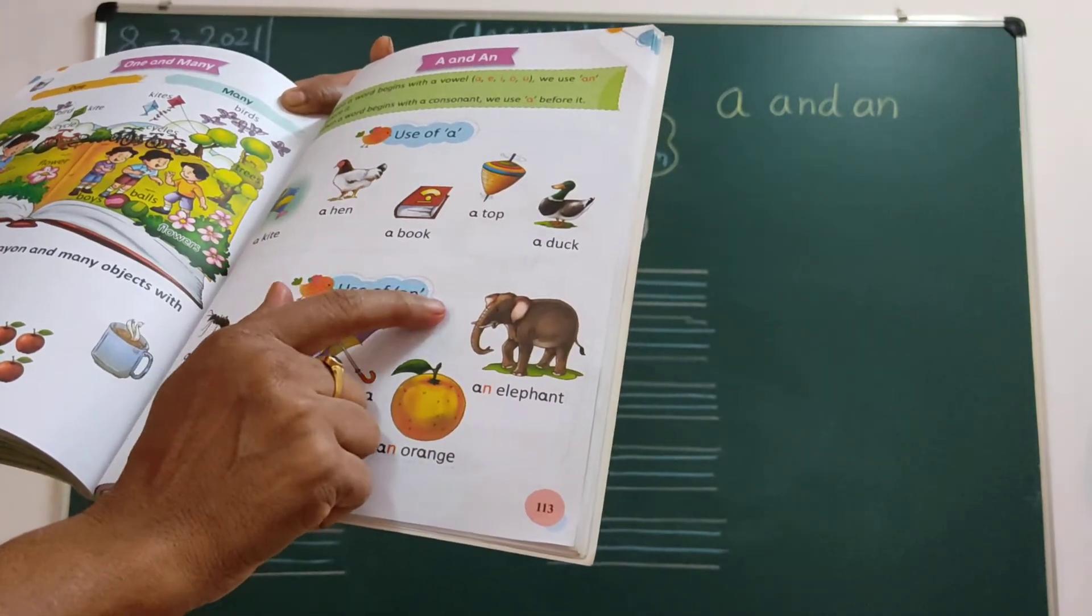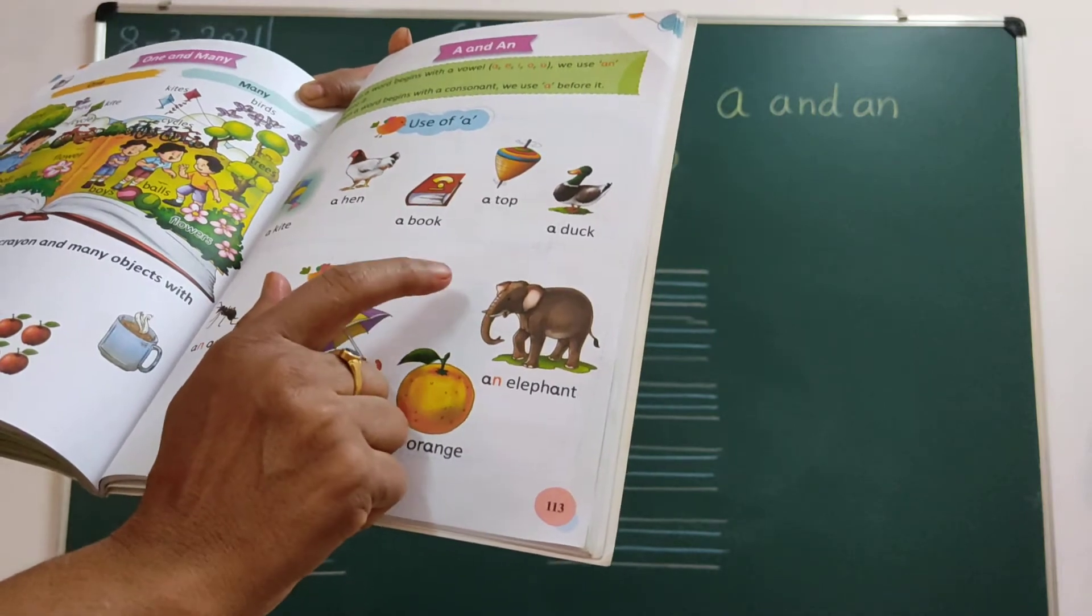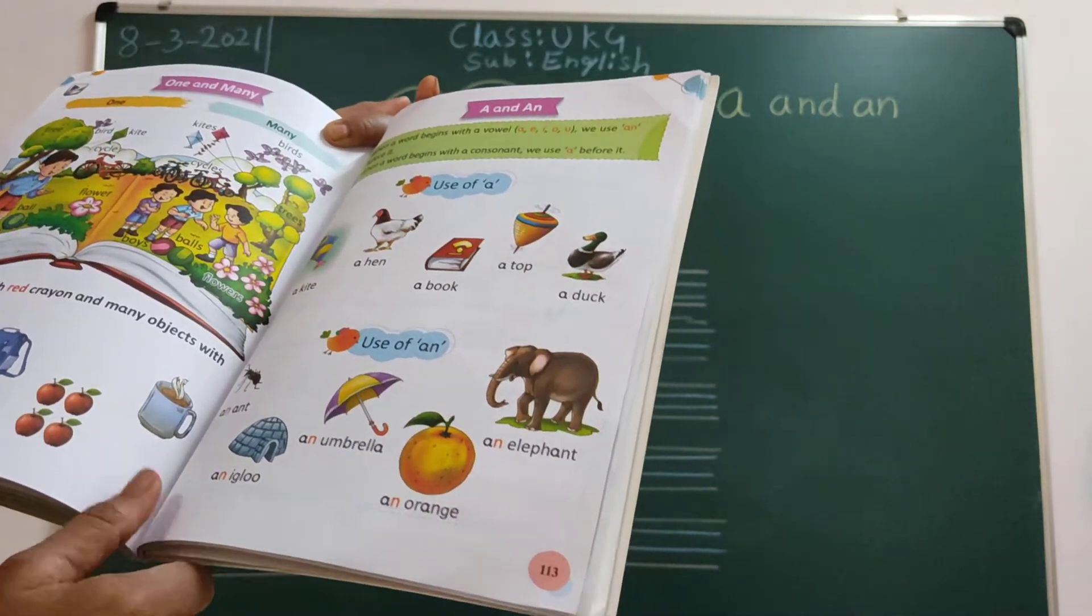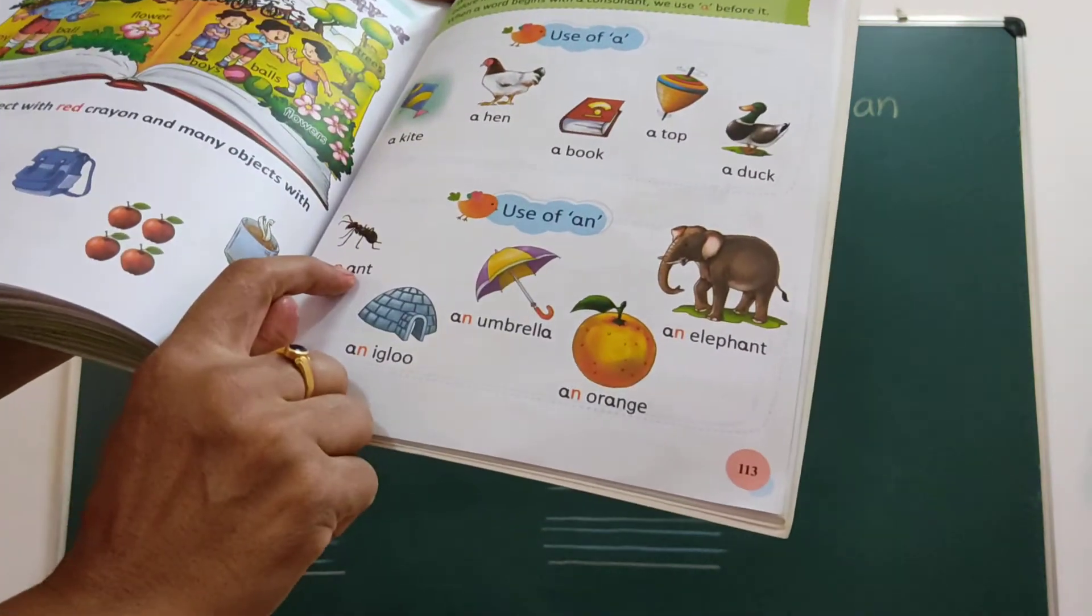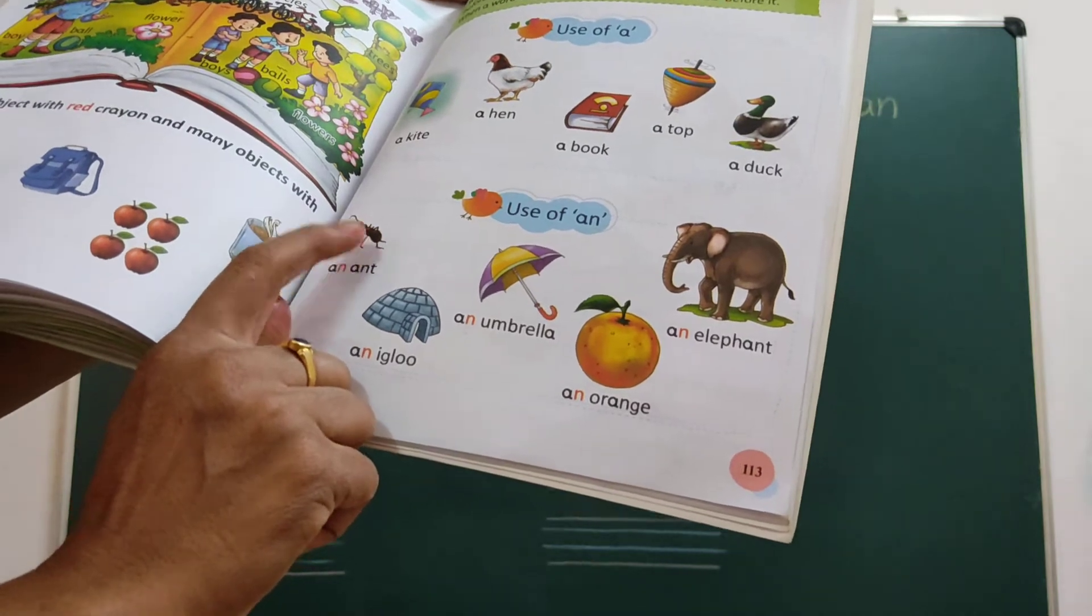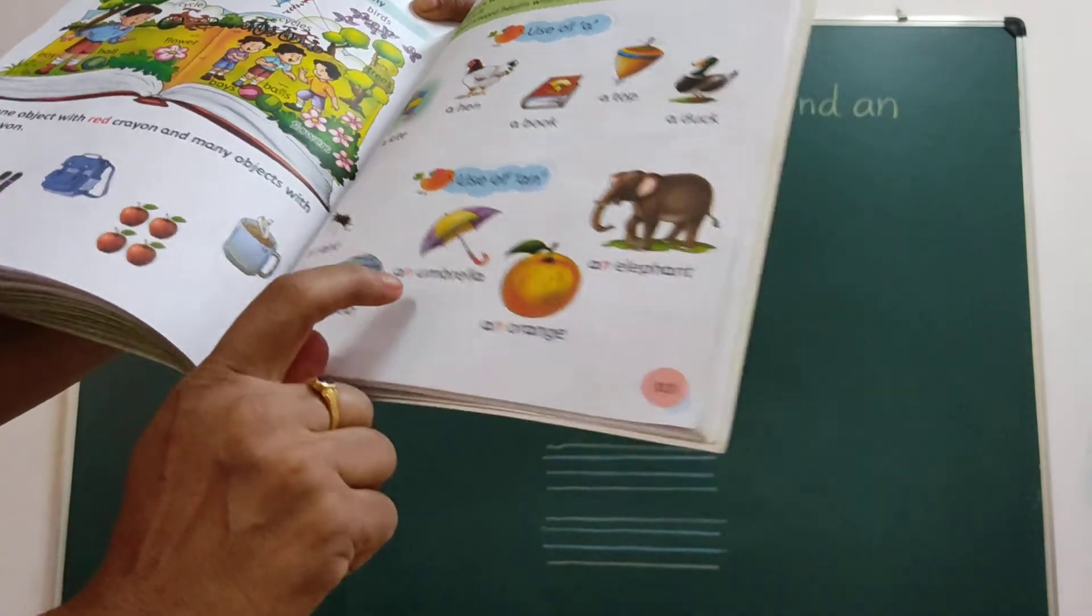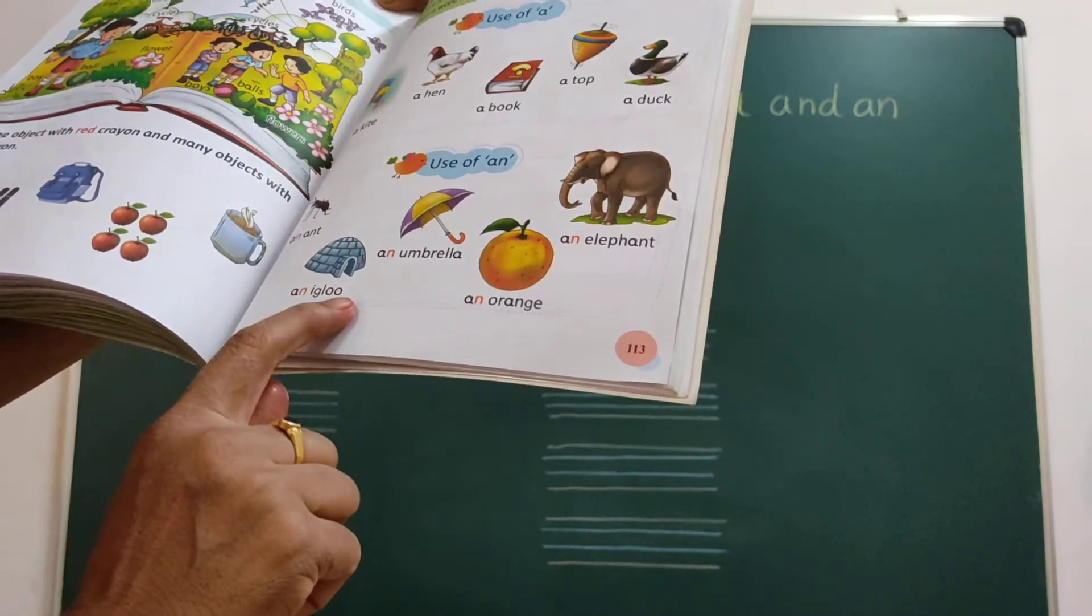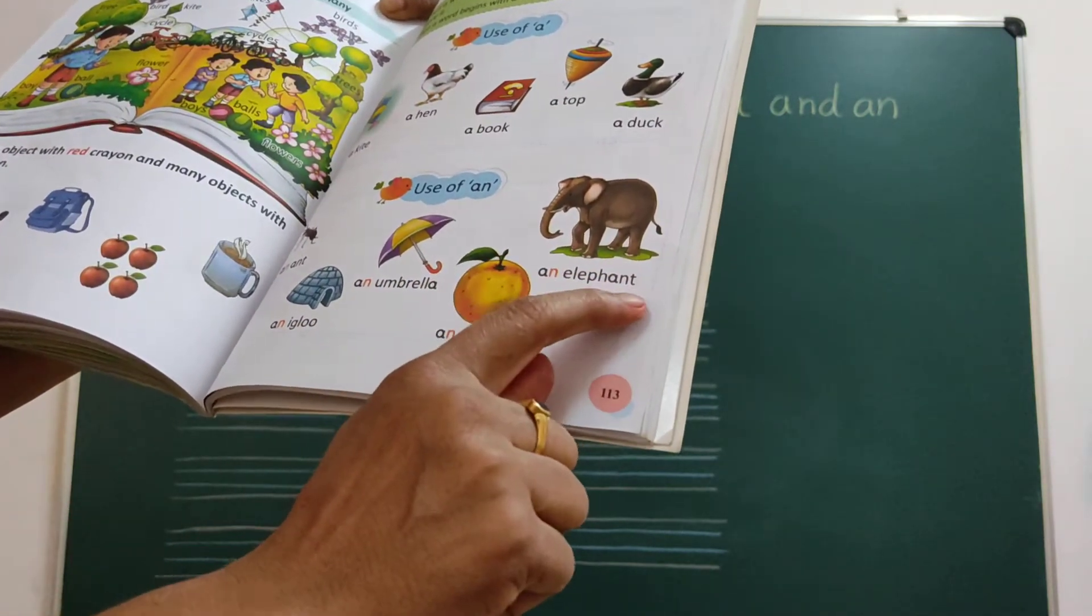Next, use An. So when we will use An? When a word begins with a vowel sound. See here. An ant. What is this picture? An ant. An umbrella. An igloo. An elephant. See here.